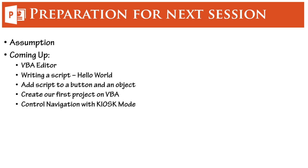We'll look into the VBA editor mostly. We'll see how to write a script and start with Hello World. Then we'll try to assign the script to a button and an object separately. Then we'll create our first project on VBA, or give you a reference to a couple of samples from the previous series on introduction to VBA in PowerPoint 2013. Then we'll look into how to control the navigation with kiosk mode. This is what we are going to see in session 2.